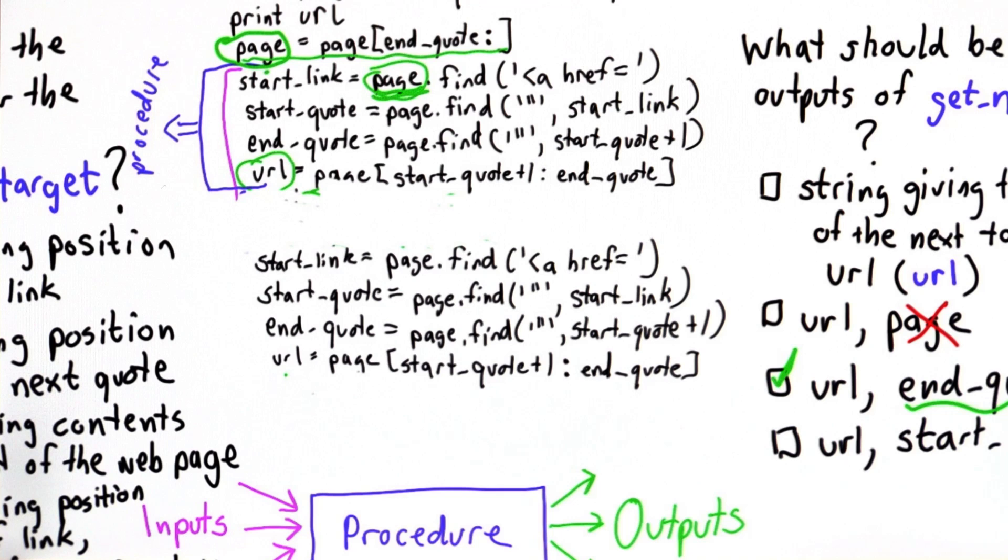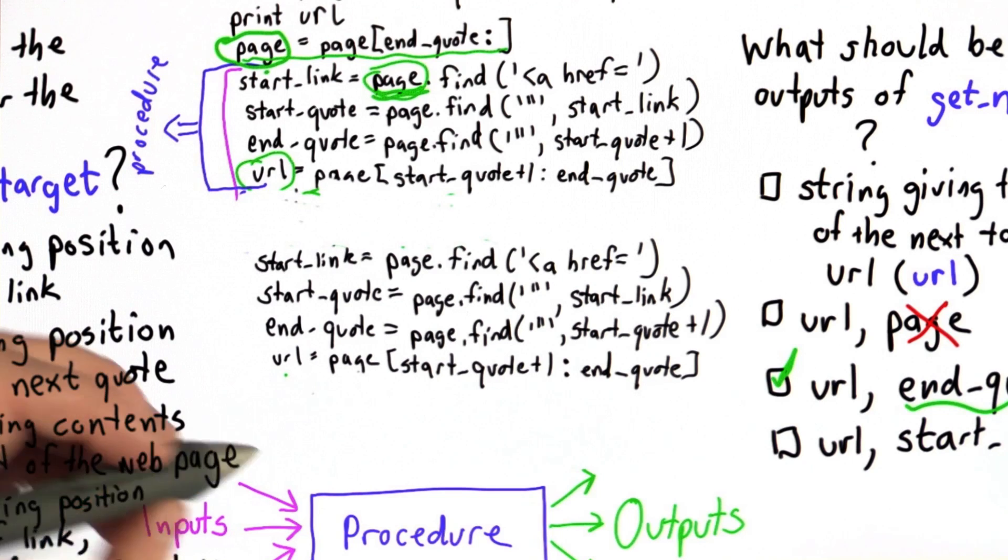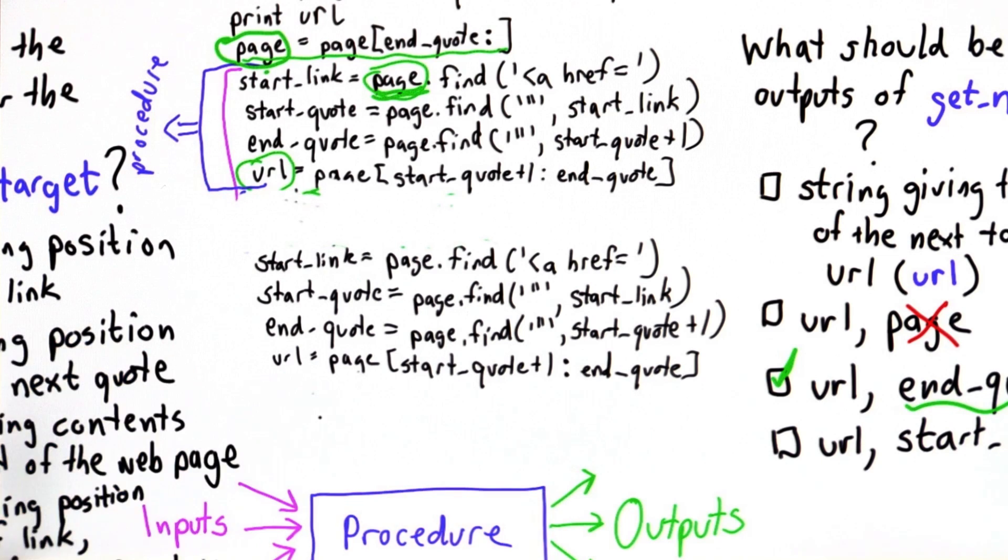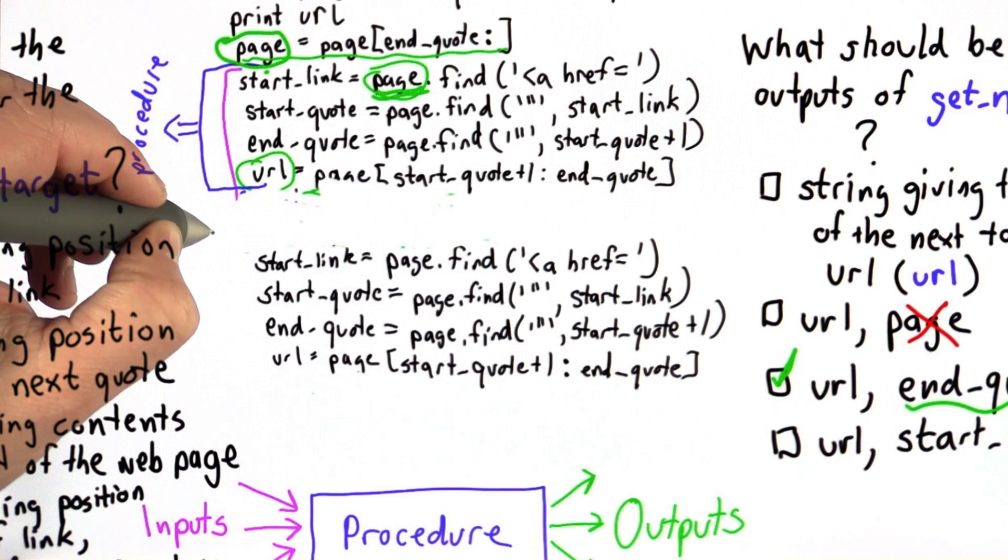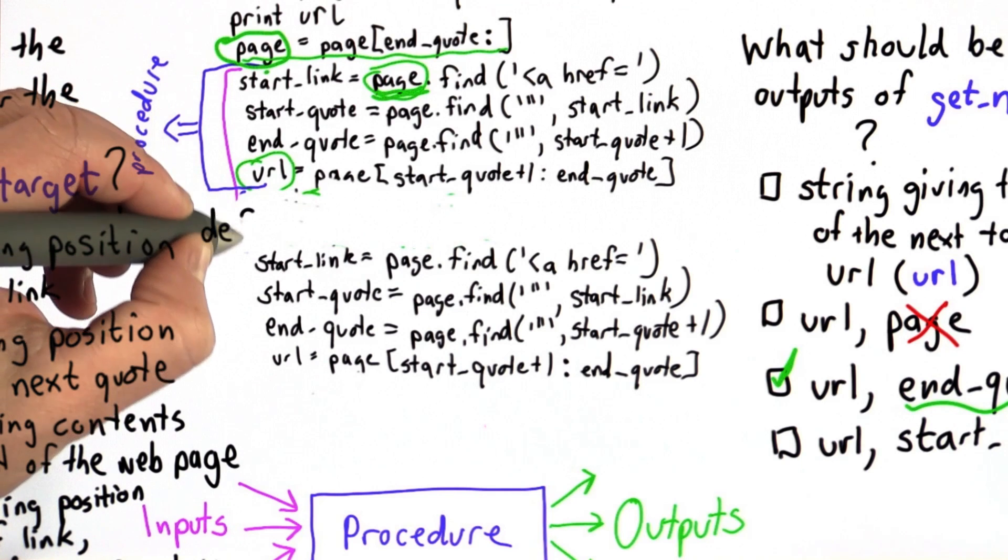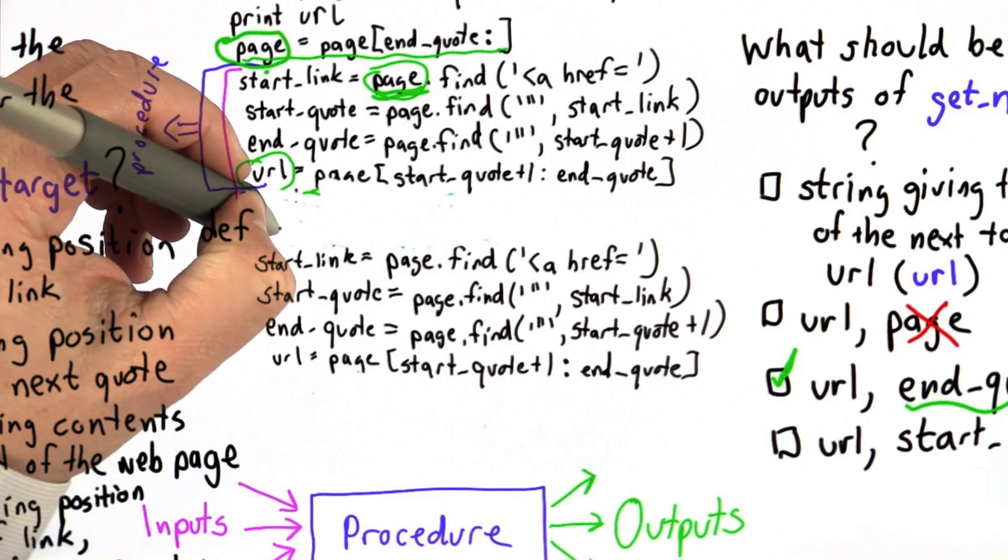What we need to do is modify that to get in the inputs and turn it into a procedure. So to make it a procedure, we need to use the def name syntax. So we're going to define the procedure getNextTarget.